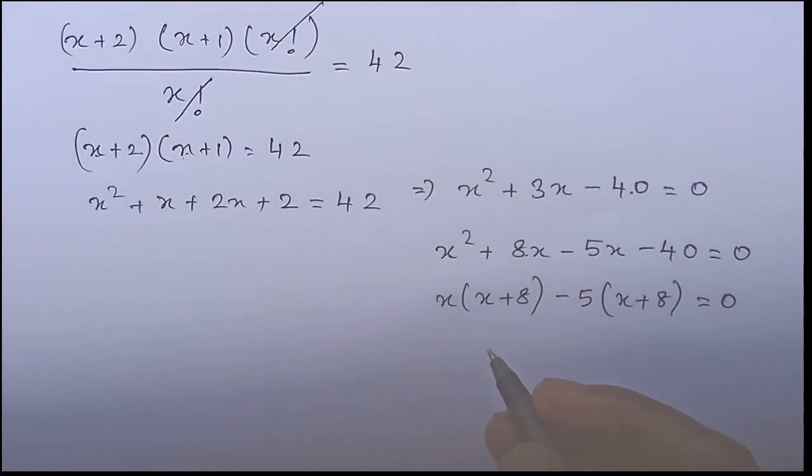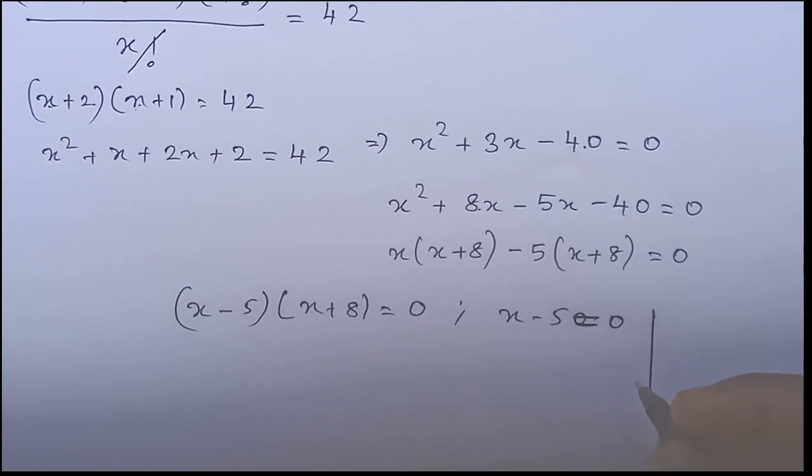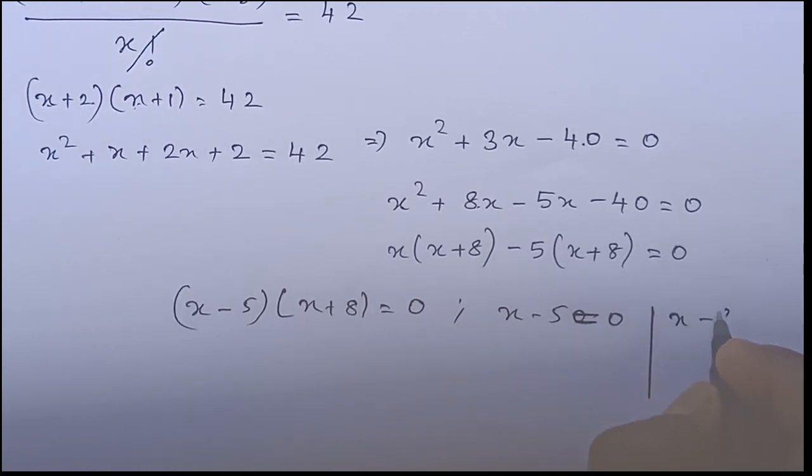So this gives you two values: x minus 5 is equal to 0 or x plus 8 is equal to 0.